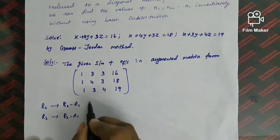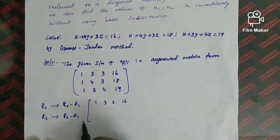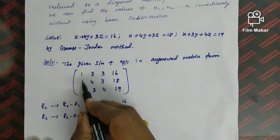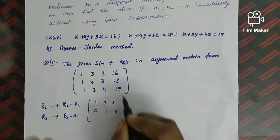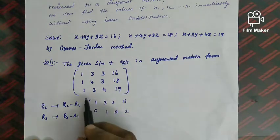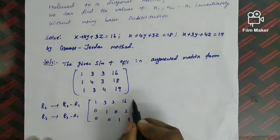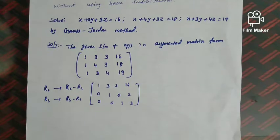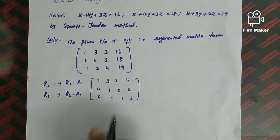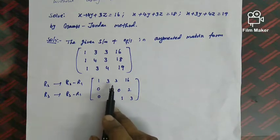After applying R2 = R2 − R1: (1−1, 4−3, 3−3, 18−16) = (0, 1, 0, 2). After R3 = R3 − R1: (1−1, 3−3, 4−3, 19−16) = (0, 0, 1, 3). Our aim is to make all off-diagonal elements zero. We still have 3 and 3 in the first row that need to become 0.